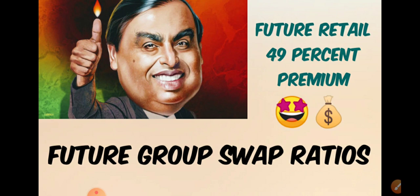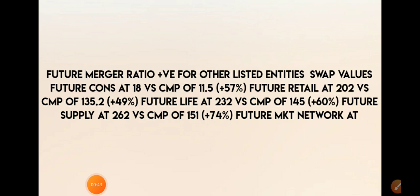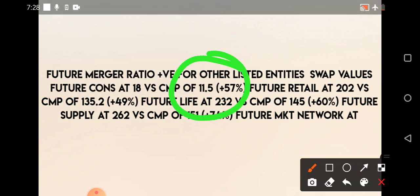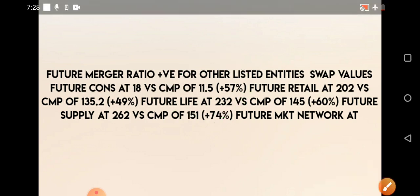If we calculate the fair values based on what we discussed yesterday, you can see that Future Consumer's fair price will be around 18 rupees, and the current market price is around 11.5 rupees. So how much premium are we getting? We are getting almost 57 percent. And if you see Future Retail, the fair price is 202 rupees, while the current market price is 135 rupees, meaning the premium you are getting is 49 percent.